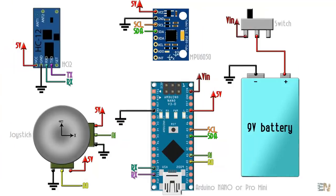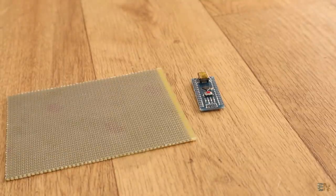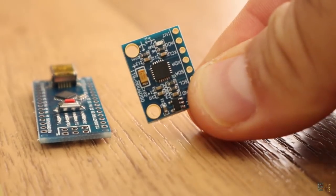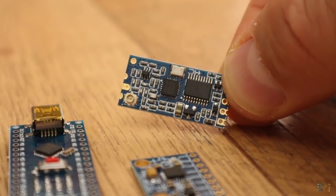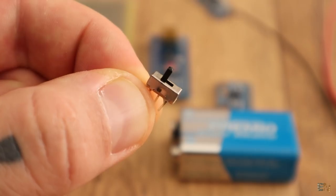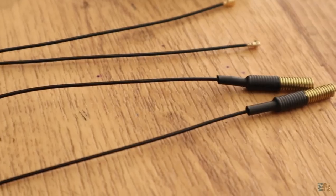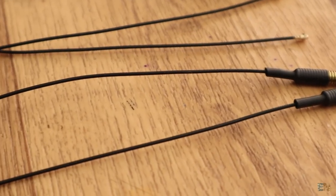This is the schematic that I will use for the transmitter. All we need is an Arduino, the IMU module which is the MPU6050 in this case, the HC12 radio transmitter and of course a battery. I also have this on and off switch and some of these antennas for the radio modules.